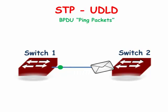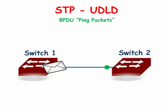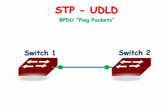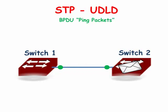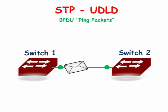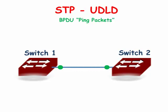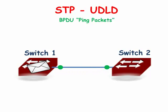Unidirectional link detection works by sending out echo packets, just like ping packets. If a switch is able to send and receive the UDLD packet, it means that the cable has the ability to communicate with the other switch. UDLD has to be configured on both of the connected switch interfaces for it to work properly. They need to be able to ping each other with the UDLD packet.